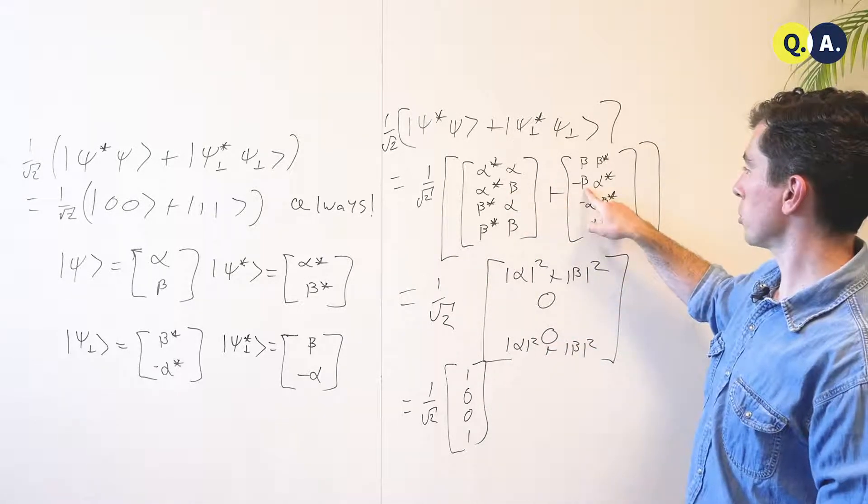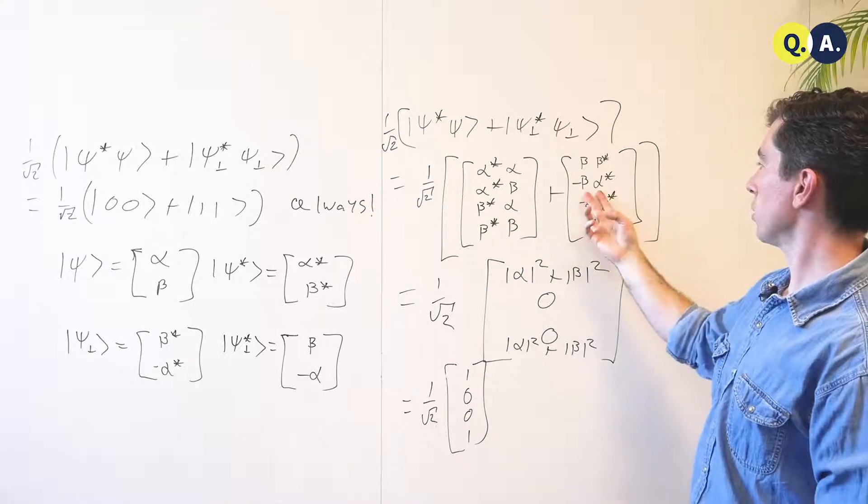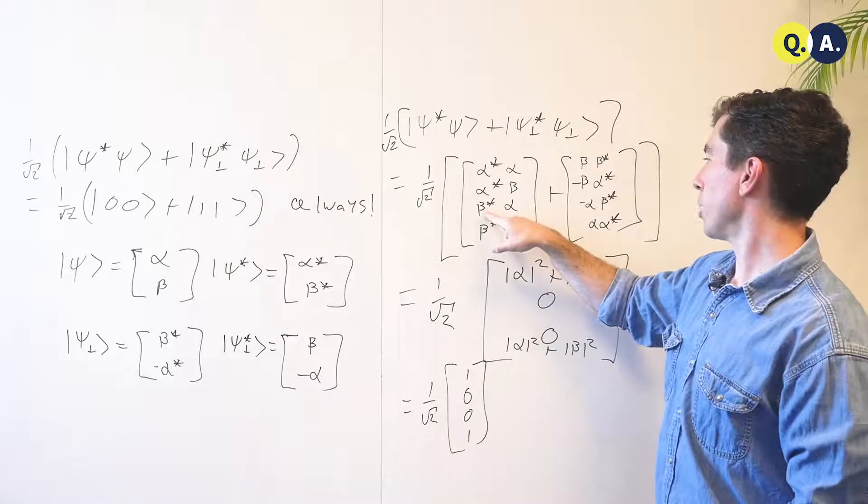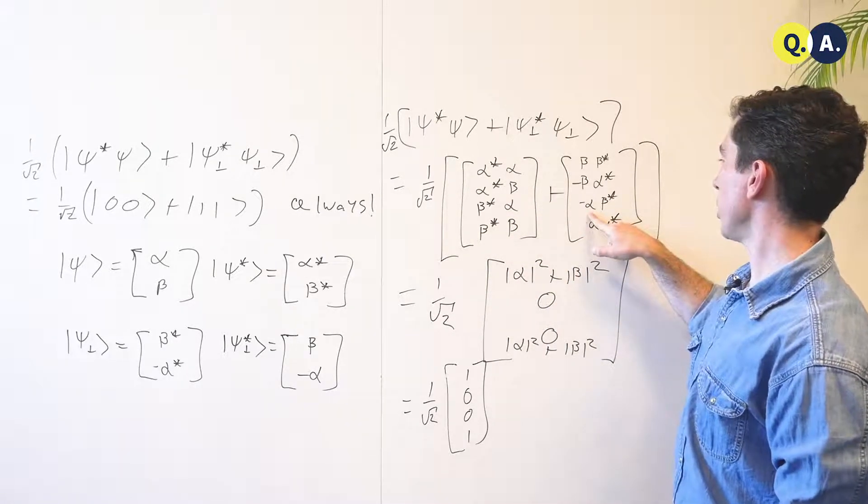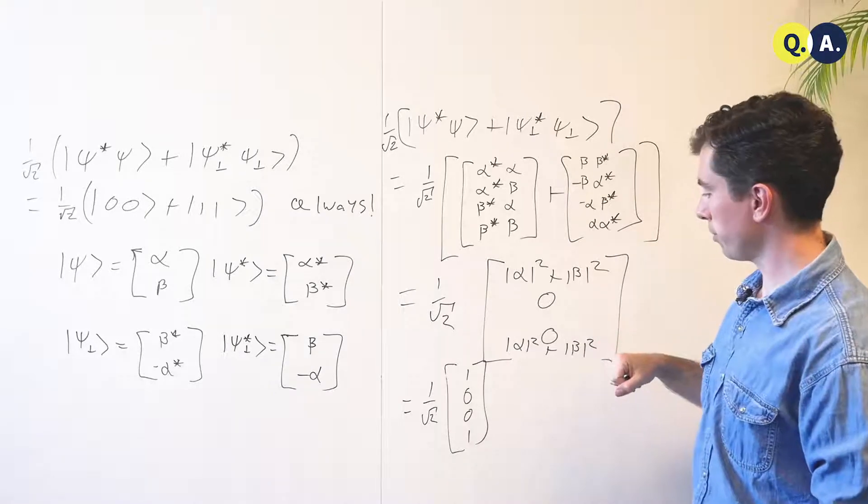And then these inner terms cancel because you have an alpha star beta minus beta alpha star, this has just been flipped here, and a beta star alpha minus alpha beta star. If I flip these two, it becomes obvious that they're equal and opposite, so they cancel.